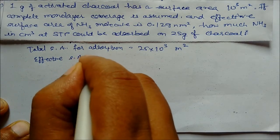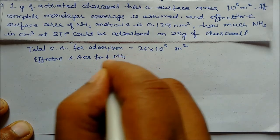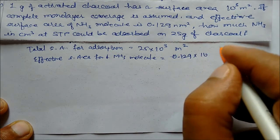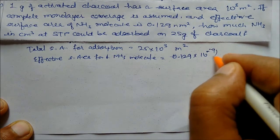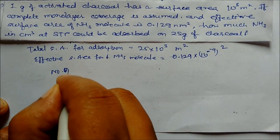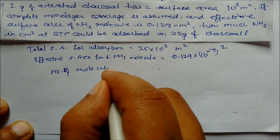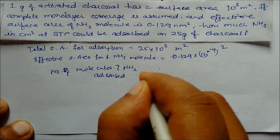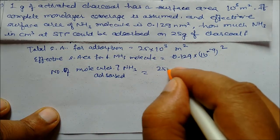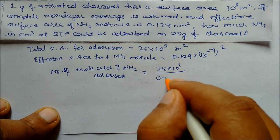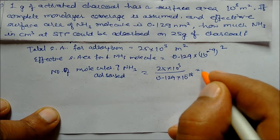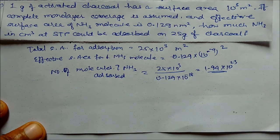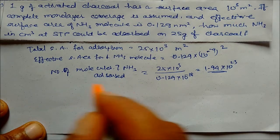Effective surface area per ammonia molecule is 0.129 into 10 to the power minus 18 m squared. Number of molecules of ammonia adsorbed equals total surface area (25 into 10³ m²) divided by area per molecule (0.129 into 10⁻¹⁸ m²). Solving gives 1.94 into 10²³ molecules.